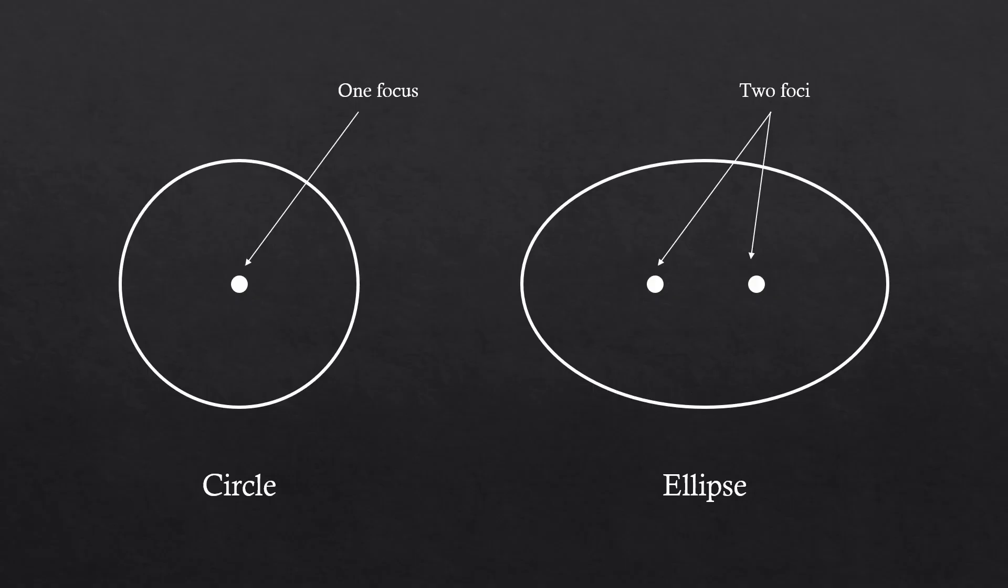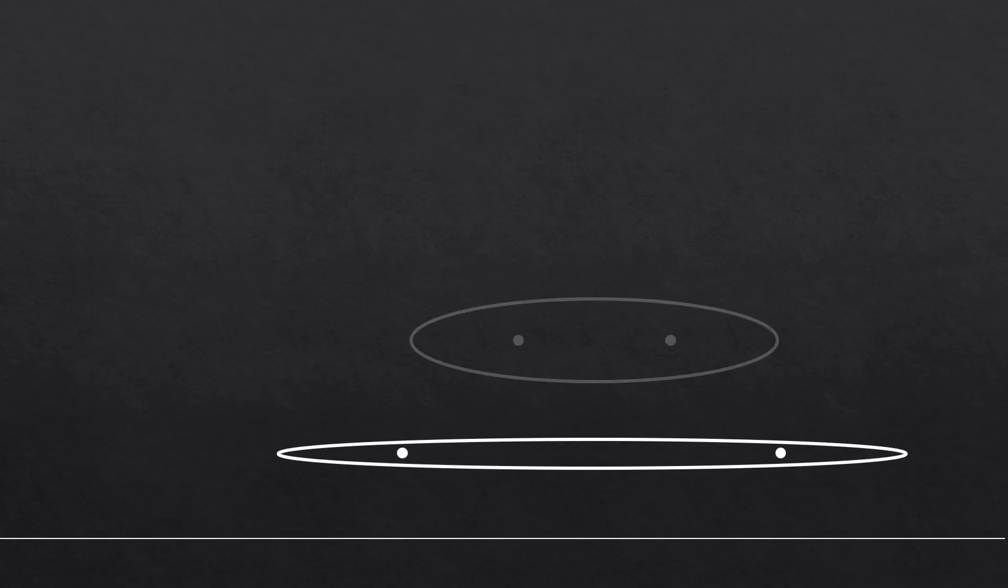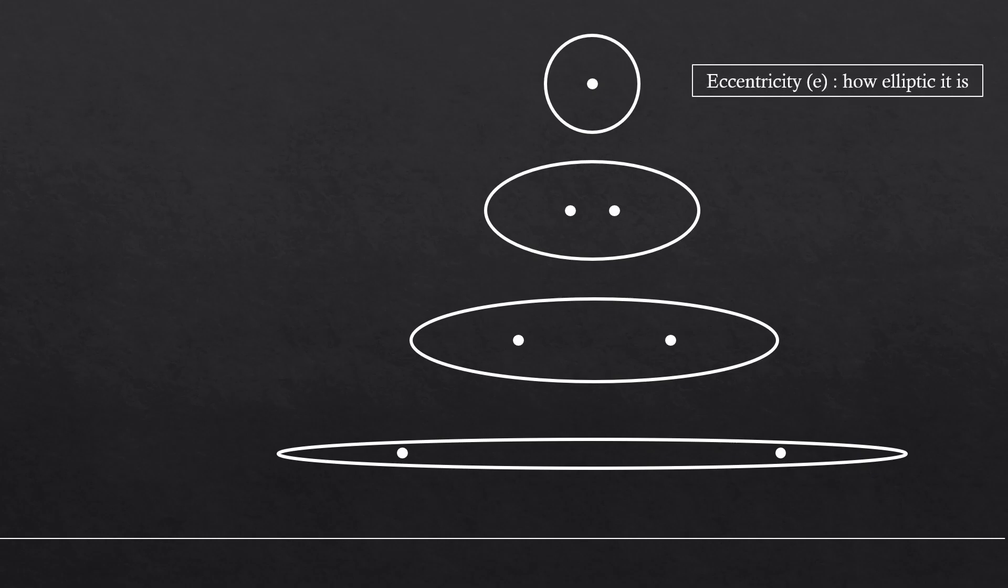You could think of this as two foci coming into single focus as the ellipse turns into a circle. Make sense? Now, we are going to mathematically describe this shape using eccentricity. Eccentricity tells how elliptic it is. Let me ask you something. How elliptical is this circle? Does it have any ellipticness? No. No ellipticness. What number could we use for no ellipticness then? Zero, right? Eccentricity of a circle is zero.